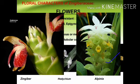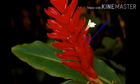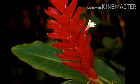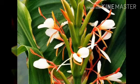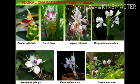In Curcuma the bract is persistent and coriaceous. In Costus the bracts are coriaceous. In Alpinia the bracts are variously colored, and because of this variability in colors the Alpinia species are of great ornamental value. The flowers are pedicellate or sessile, complete — all floral whorls present — zygomorphic, bisexual, epigynous, and cyclic. Flowers are large, beautifully colored, and trimerous.